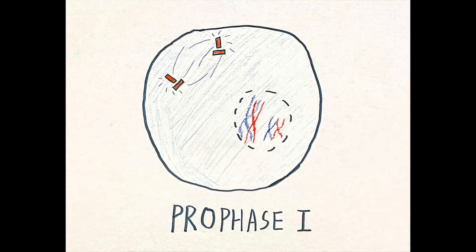Meiosis I separates the homologous chromosomes. Homologous chromosomes produce two haploid daughter cells. Prophase takes the longest out of the other phases. Within prophase I, there are multiple sub-phases: the leptotene phase, the zygotene phase,